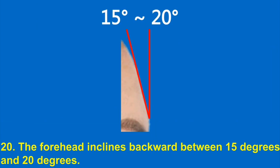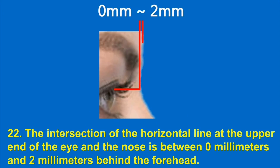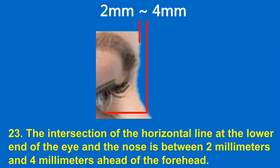20. The forehead inclines backward between 15 degrees and 20 degrees. 21. The eye is between 6 mm and 1.2 cm behind the forehead. 22. The intersection of the horizontal line at the upper end of the eye and the nose is between 0 mm and 2 mm behind the forehead. 23. The intersection of the horizontal line at the lower end of the eye and the nose is between 2 mm and 4 mm ahead of the forehead.